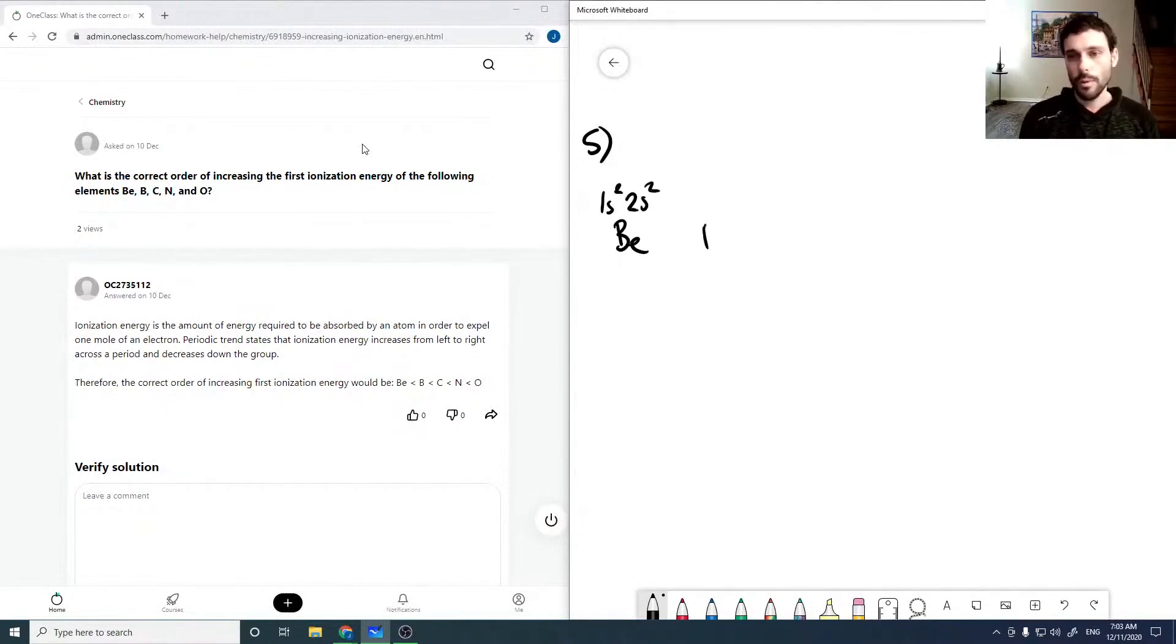Boron is 1s² 2s² 2p¹. Carbon is 1s² 2s² 2p².